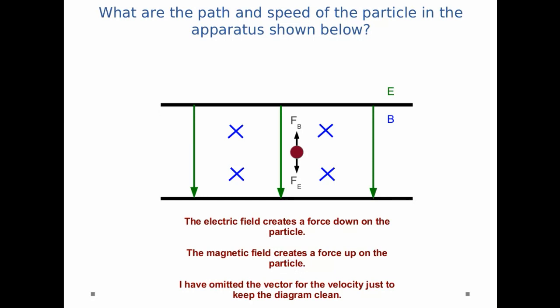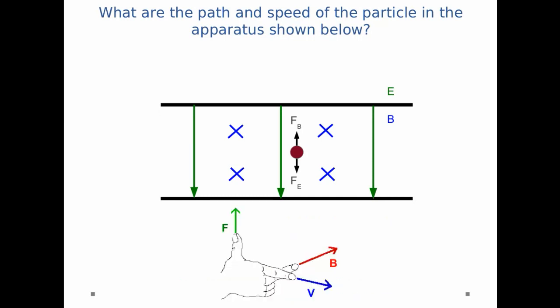The magnetic field creates a force up on the particle. Why is that? We can use the right-hand rule. V points to the right, B points into the page, and so force points upward.